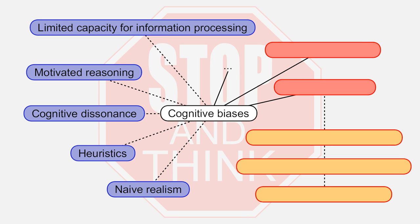There are many cognitive biases. One of the most important and ever-present is confirmation bias. Confirmation bias should not be a feature of reasoning conducted by scientists — scientists should consider all evidence, even if it disconfirms their hypothesis, and must be ready to abandon a hypothesis disconfirmed by evidence. Confirmation bias is a feature of normal day-to-day human reasoning. It causes people to prefer information that confirms what they already know: their assumptions, convictions, beliefs, and opinions.